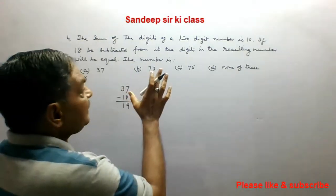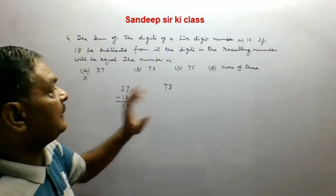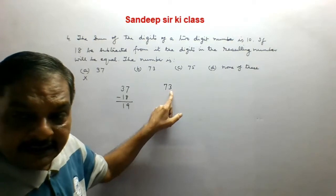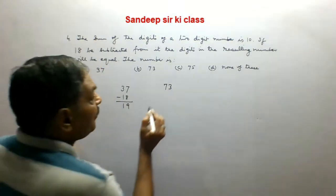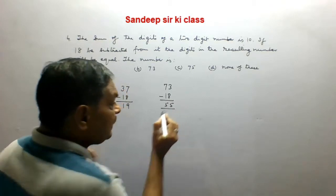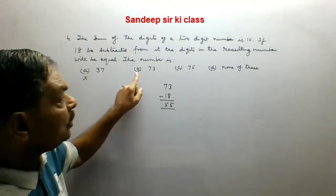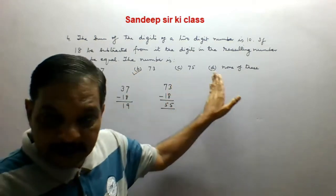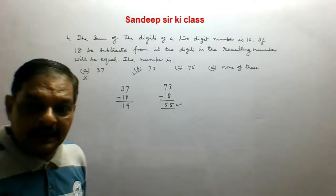Now we see option B. The number given is 73. The sum of the digits is 7 plus 3 which is 10 — this is okay. Now if 18 is subtracted from it, we obtain 55, and the resulting number 55 has both digits the same. So option B is the correct option.